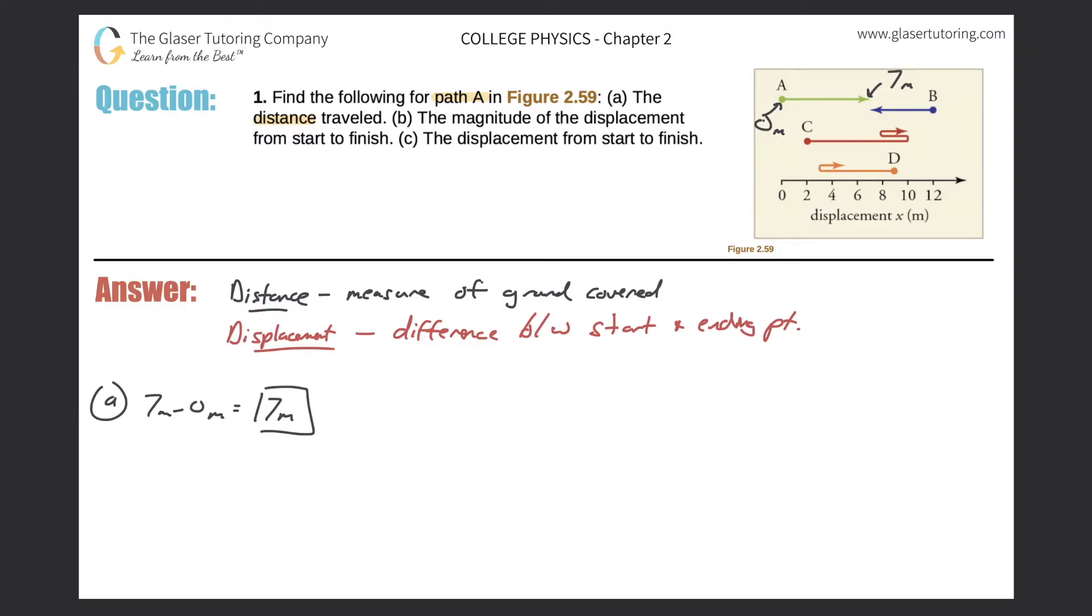Okay, part B. So now we are dealing, now it says part B says the magnitude of the displacement from start to finish. Okay, so again, same thing for path A. Let me just erase some of these markings here. So path A, again, where are we starting?